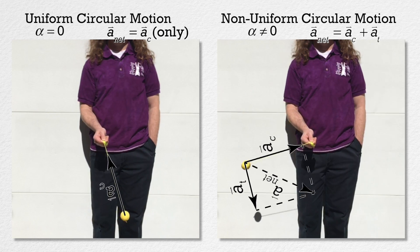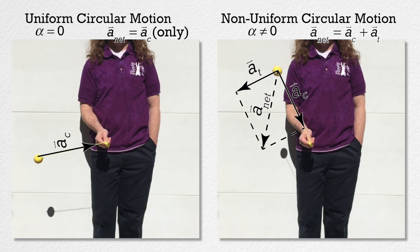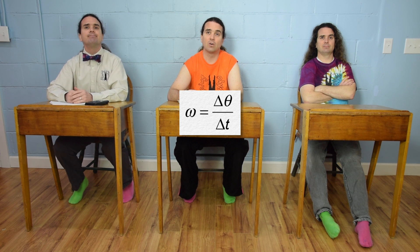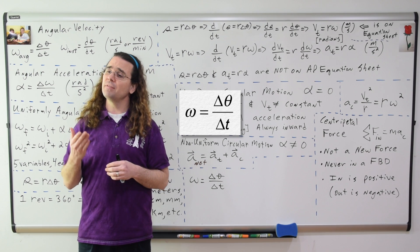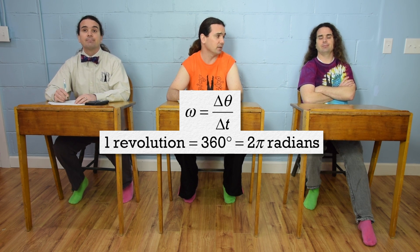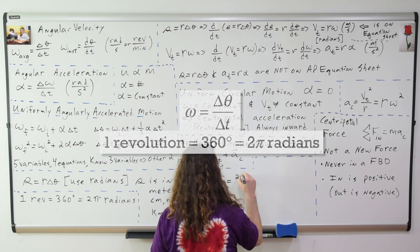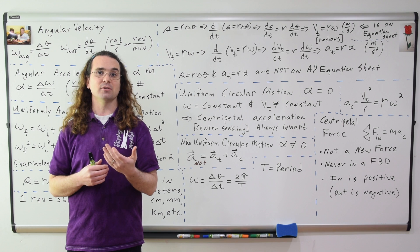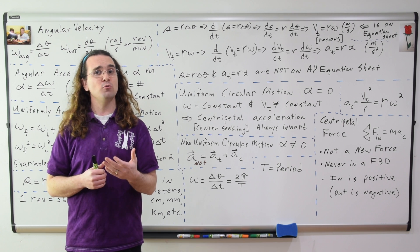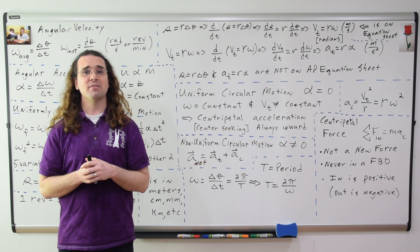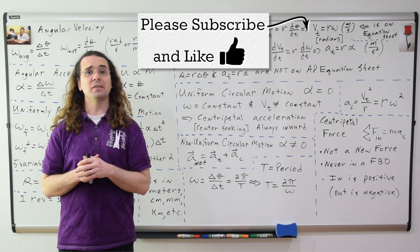Let's return to the equation for angular velocity. Bobby, average angular velocity omega equals change in angular position divided by change in time. And Bo, if an object has traveled through one full circle, how many radians has it traveled through? One revolution is 360 degrees, which is two pi radians. The time for one full revolution is called the period, with symbol capital T. Therefore, the angular velocity of an object equals 2 pi divided by the period, which we can rearrange to get: period equals 2 pi divided by the angular velocity. This does appear on the AP equation sheet.